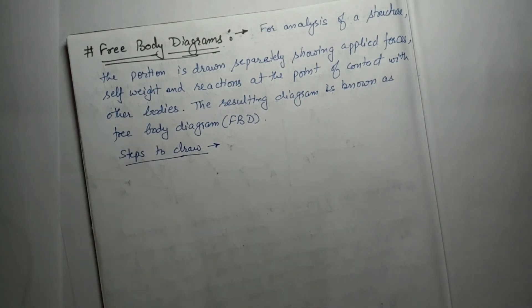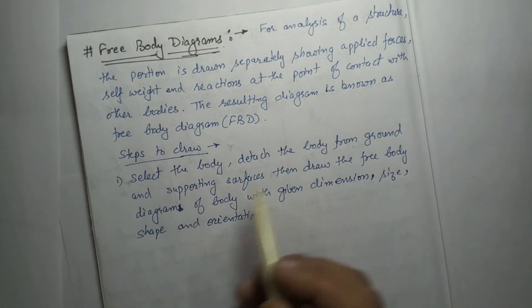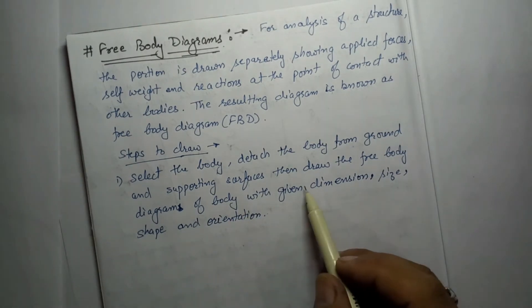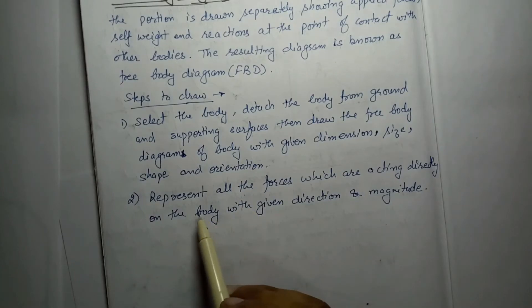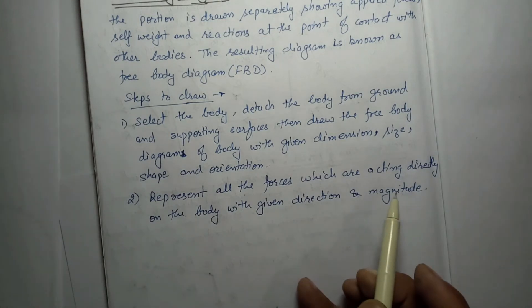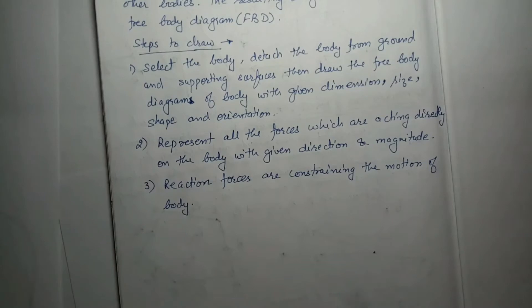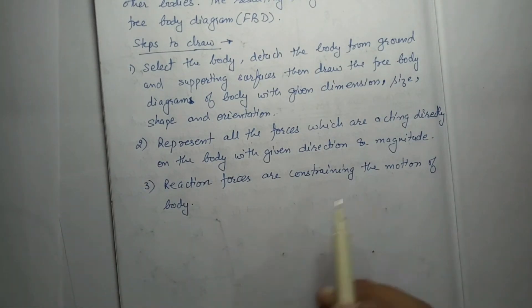Now let's see what are the steps to draw this. The first step says: select the body, detach the body from ground and supporting surfaces, then draw the free body diagram of the body with the given dimension, size, shape, and orientation. Step 2 says: represent all the forces which are acting directly on the body with the given direction and magnitude. Step 3 says: reaction forces are constraining the motion of the body.